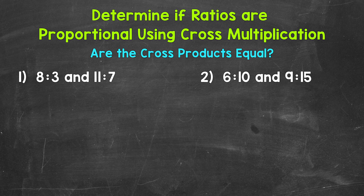Let's start by setting our ratios up in fractional form and setting them equal to each other. Now they may not turn out to be equal, but for now set them up as a proportion. We have 8/23 and 11/27.